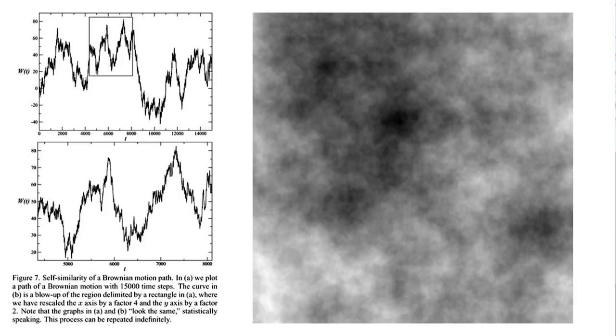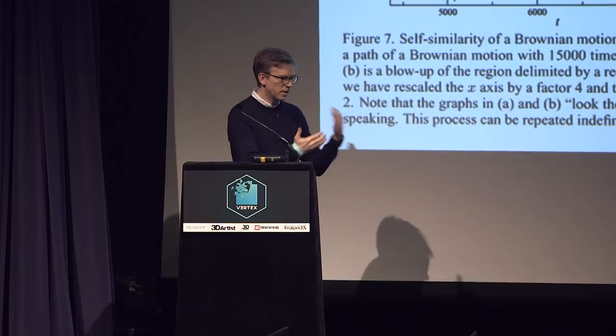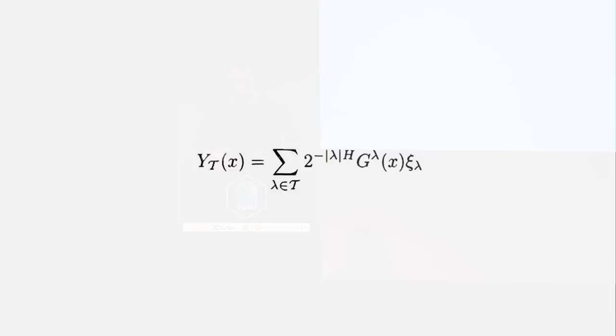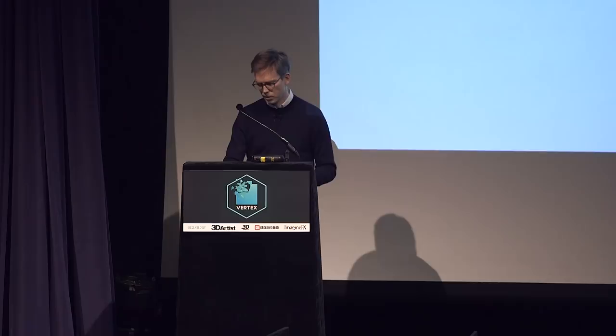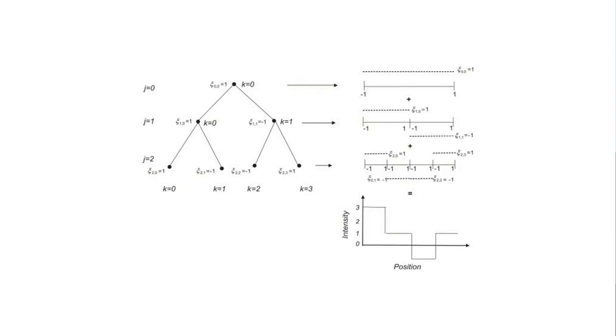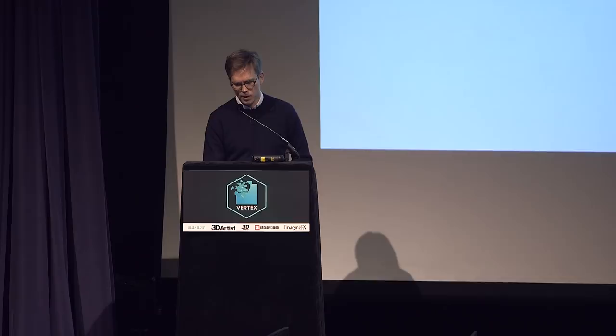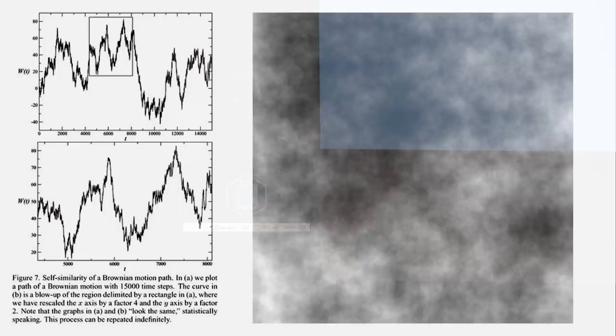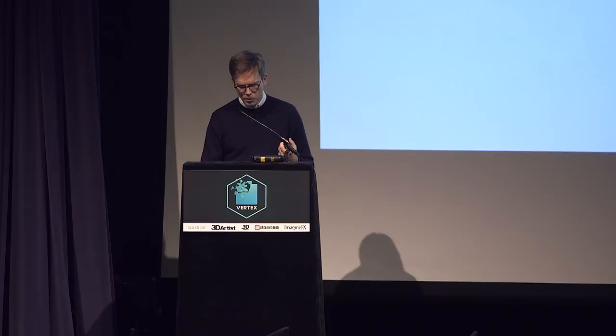I started studying random processes such as fractal noise functions — self-similar Brownian motion — during my PhD. I was working with wavelet decompositions of Gaussian random processes. For those using Substance Designer, you have what are called FX maps — essentially a tree representing a 0-to-1 space — which comes from this same type of mathematics. I started generating realizations of various trees and wavelet decompositions of random processes.